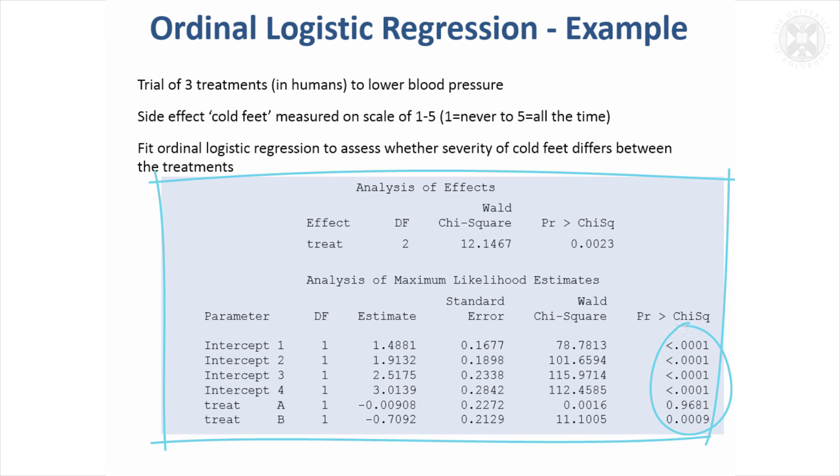These p-values relate to comparing to treatment C. Treatment A was not significantly different from C in terms of cold feet, but treatment B compared to C does have a significant effect. You'd then need to add another option to compare treatments A and B if they were also significantly different in terms of cold feet.